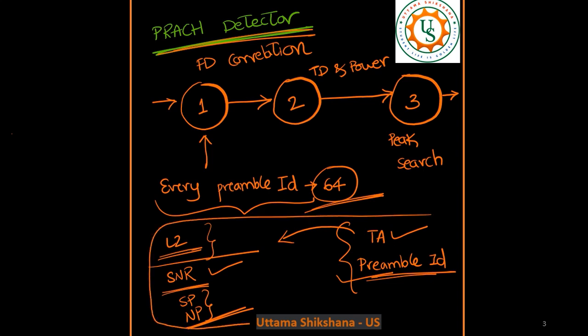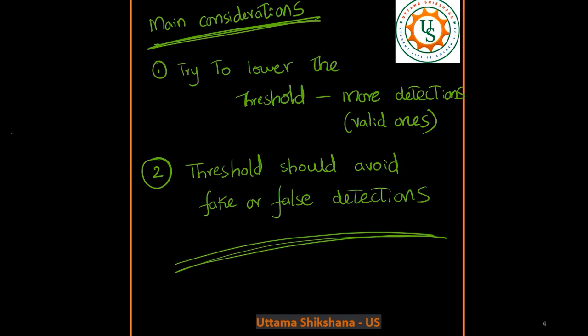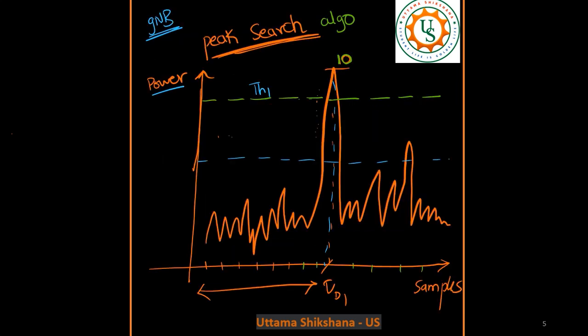All these things will be reported only when there is a peak which is above the threshold setting. That threshold design mainly depends on certain considerations. The first thing is this threshold value should be as low as possible so that more valid preamble IDs are detected, and at the same time the threshold should not detect any false preamble IDs.